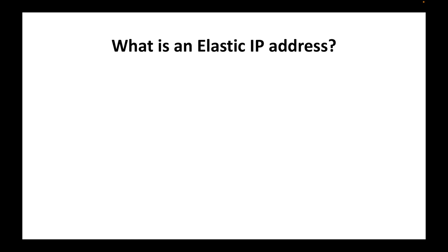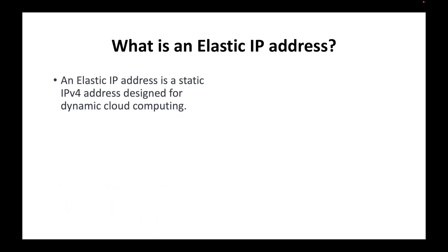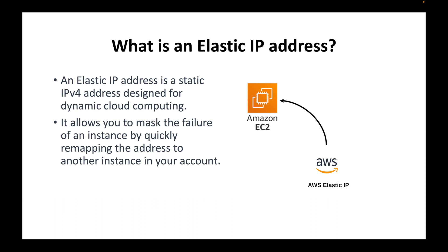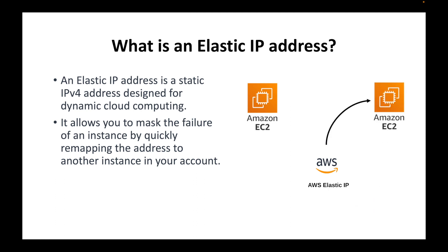The next question is: what is an Elastic IP address? Whenever we launch EC2 instances, by default we get a public IP address, but that address will change if we stop and start the instance. If you don't want that to happen, you can use an Elastic IP, which gives you a static public IP address designed for dynamic cloud computing. Another advantage is that it allows you to mask the failure of an instance — if an instance goes down you can terminate it, launch a new one, and simply remap the same Elastic IP to the new instance.